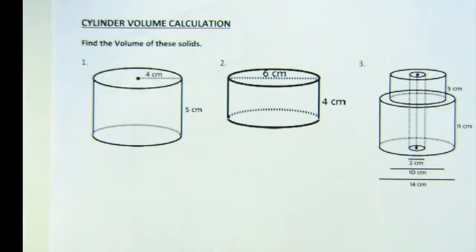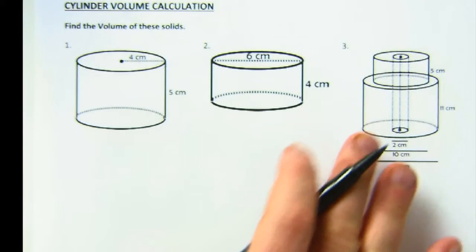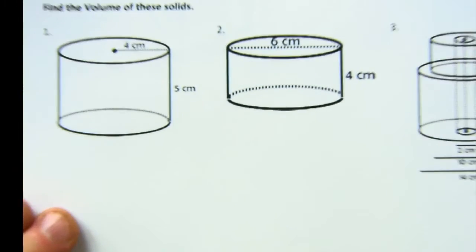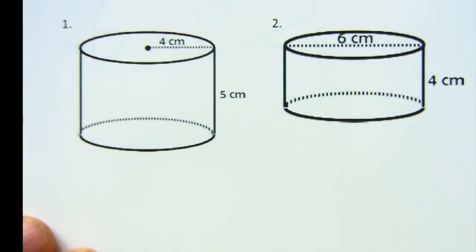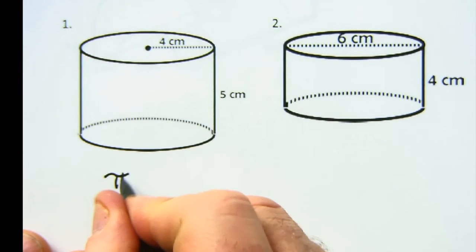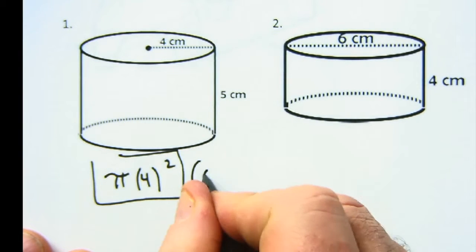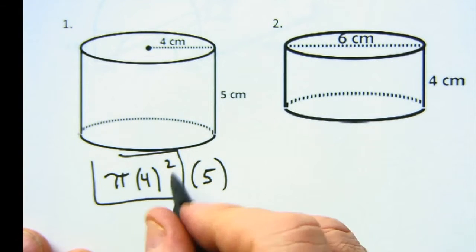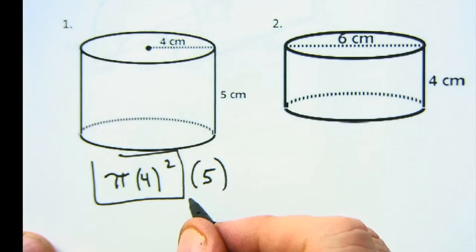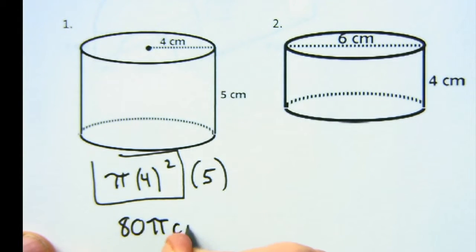But really we're in the business of calculations in this particular worksheet and time period. So let's just look at these. This is very simple. Pi r squared, that's one base, times the height of 5, so this is 16 times 5 is 80 pi centimeters cubed. That's the exact answer.